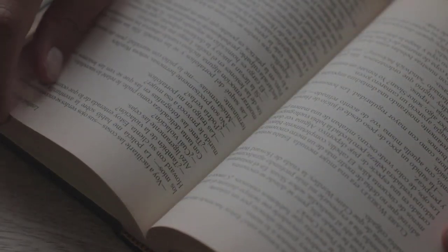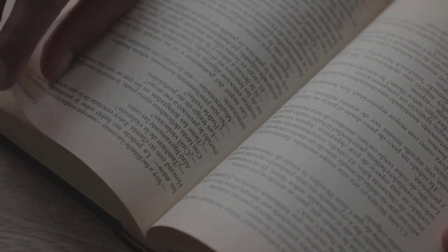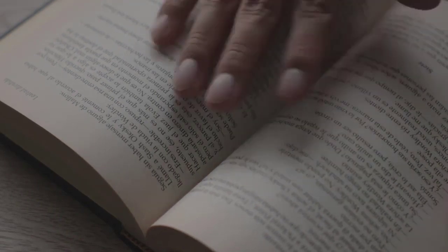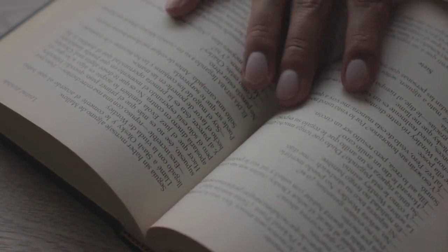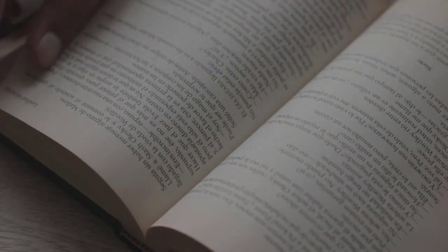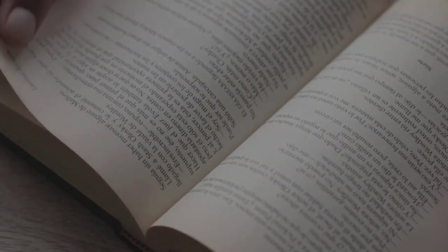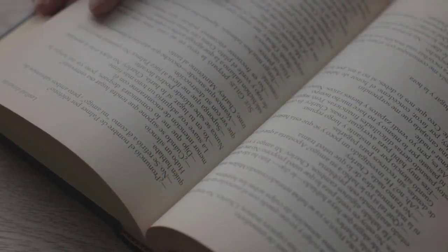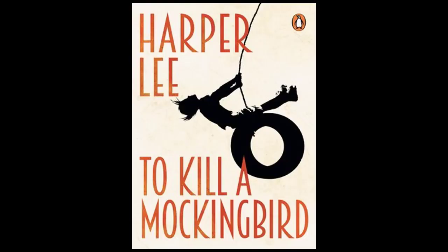To Kill a Mockingbird follows the Finch family, primarily focusing on young Scout Finch, her brother Jem, and their father Atticus. The story is narrated by an adult Scout, reflecting on her childhood experiences. The Finch family lives in the racially divided town of Maycomb, Alabama.